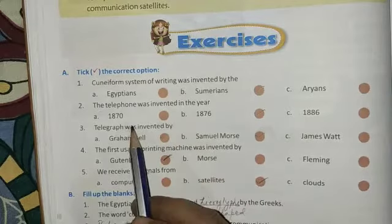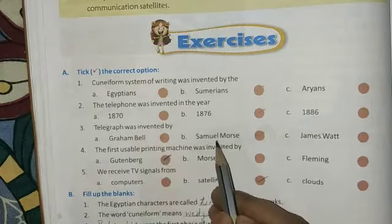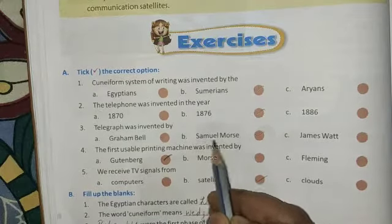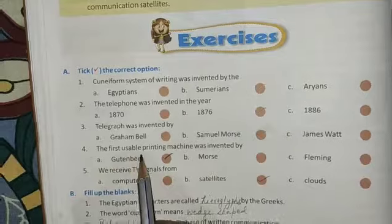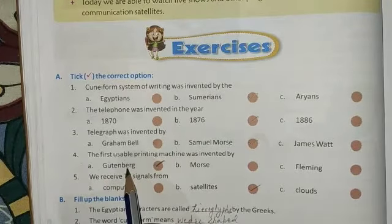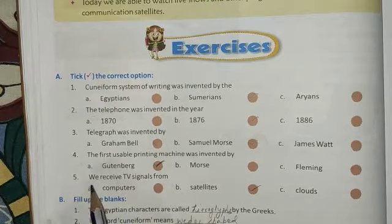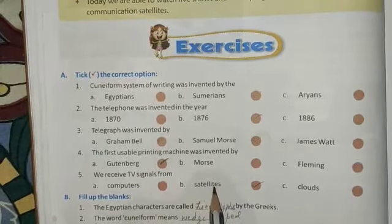Now number 3, telegraph was invented by Samuel Morse, B. Number 4, the first usable printing machine was invented by A, that is Gutenberg. Number 5, we received TV signals from number B, satellites.